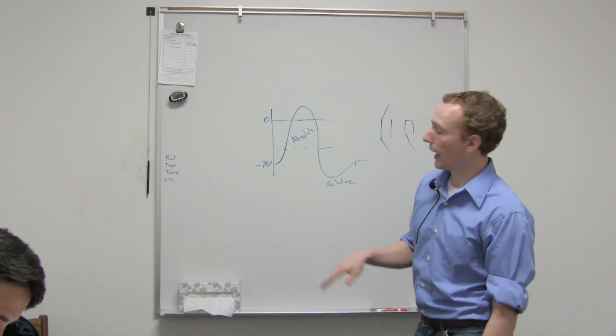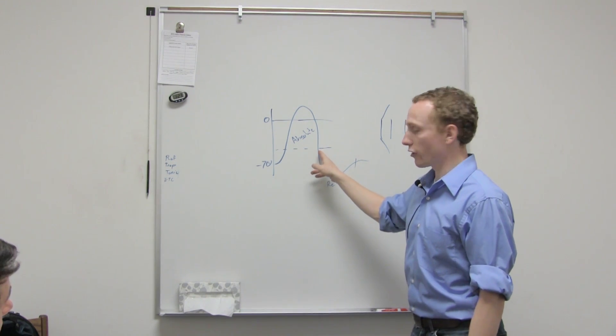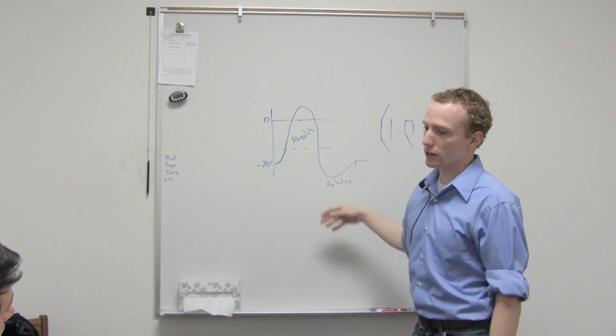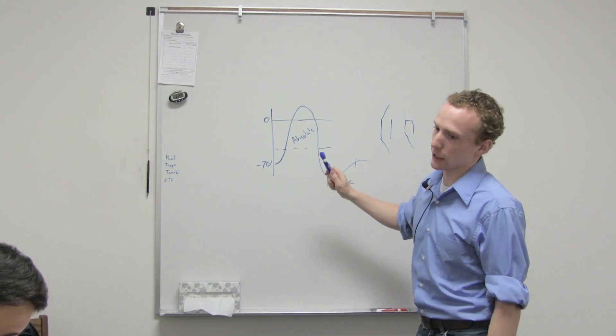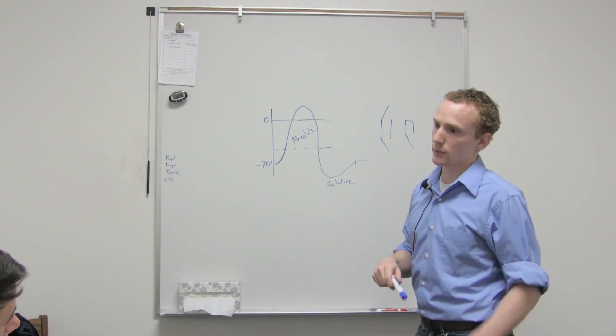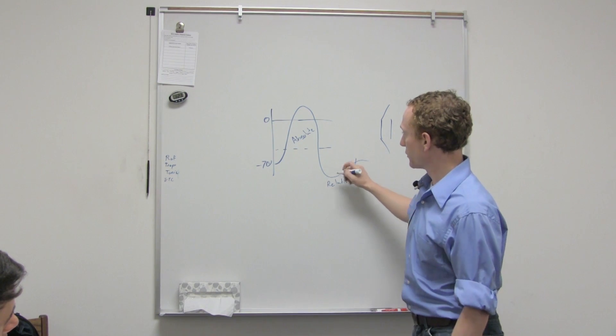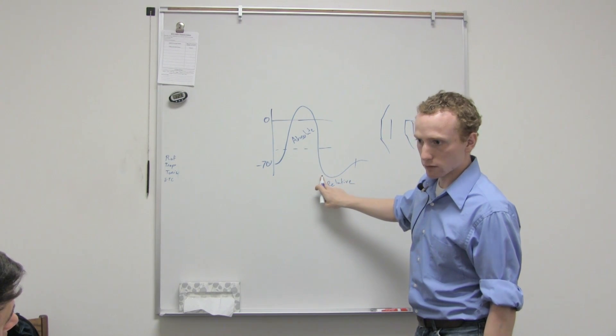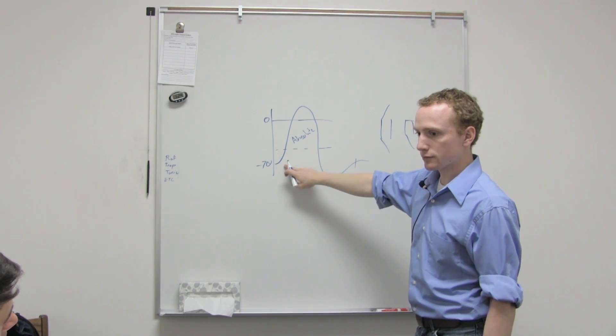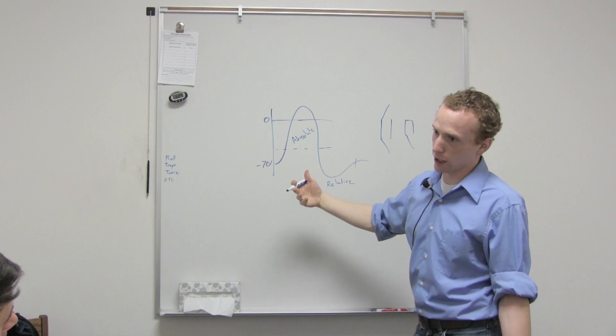The soonest we can have it is right after the absolute refractory period. But the relative refractory period - so it's relative - it can happen, but it's not very likely. The reason for that is because in the relative refractory period, we're more negative, more negative than we usually are. We're more hyperpolarized.